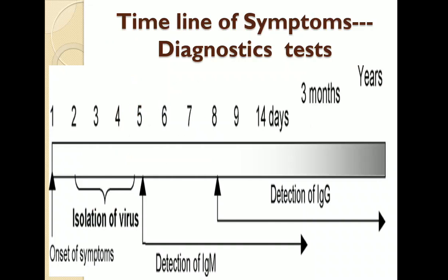This timeline of symptoms indicates the severity of infection, whether chronic or acute. On day 2 to 5, if we check the patient's blood, the virus can be isolated. From the 5th day of symptom onset, if IgM is detected in the blood it indicates acute infection. From day 8 onwards, for months to years, elevated IgG levels indicate that the infection is in the chronic stage.